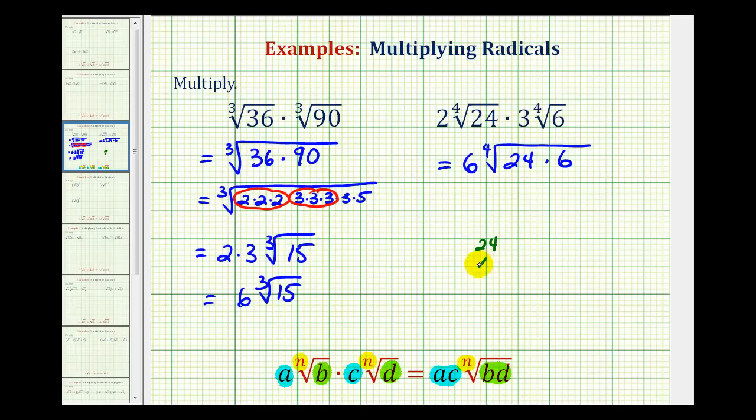Well, 24 is equal to 4 times 6. 4 is equal to 2 times 2, and 6 is equal to 2 times 3. And of course, 6 is equal to 2 times 3. So now we can rewrite this as 6 times the 4th root of, we'll have 1, 2, 3, 4 factors of 2, and 1, 2 factors of 3.